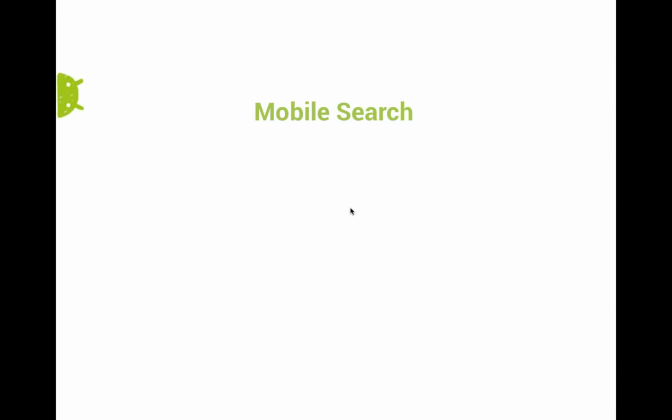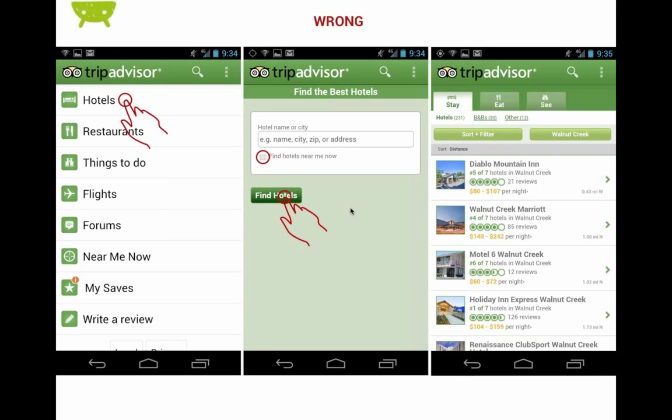What I'd like to do is look at mobile search — just a tiny spot of it. Mobile search is really important, and unfortunately it's pretty easy to get it wrong. Here's one example of that.